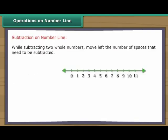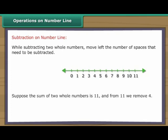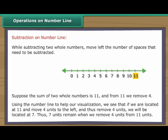While subtracting two whole numbers, move left the number of spaces that need to be subtracted. Suppose the sum of two whole numbers is eleven, and from eleven we remove four. Using the number line to help our visualization, we see that if we are located at eleven and move four units to the left, and thus remove four units, we will be located at seven.